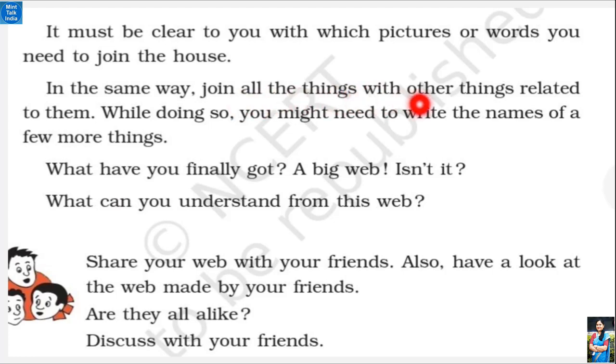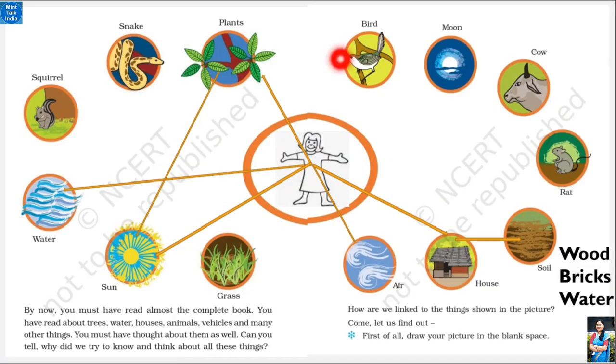Join all the lines with other things related to them. Now we will see that all these things will be needed. First of all, we will start with birds. Birds will eat plants. They will need their food.